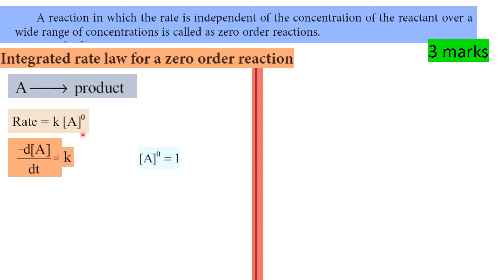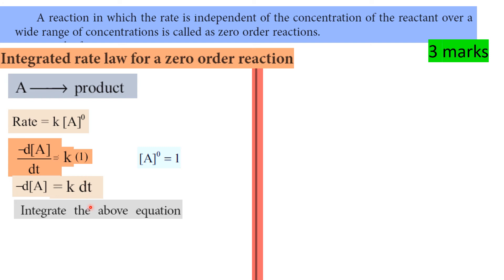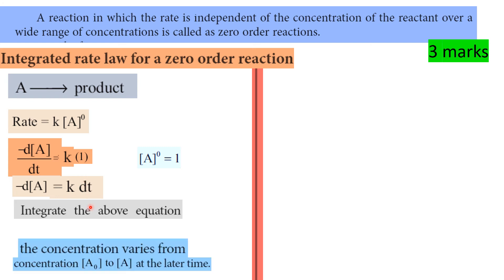So minus dA by dt equals k, since A to the power 0 equals 1. Therefore minus dA equals k dt. Integrating: concentration varies from A0 to A, and time varies from 0 to t.